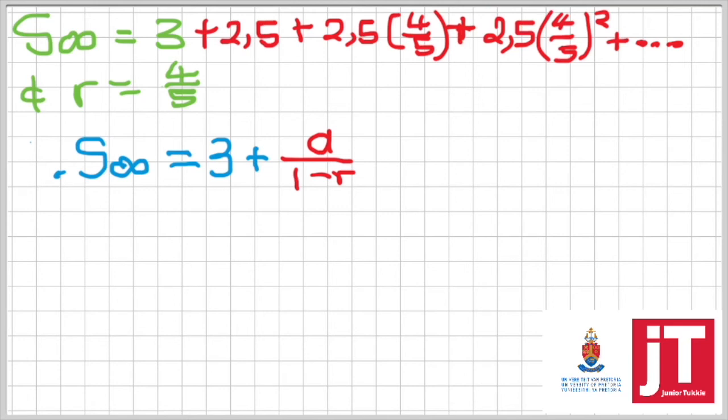And notice again, the red part is indicating the sum to infinity part. So we substitute within that red series that's starting with 2.5 as its first term.